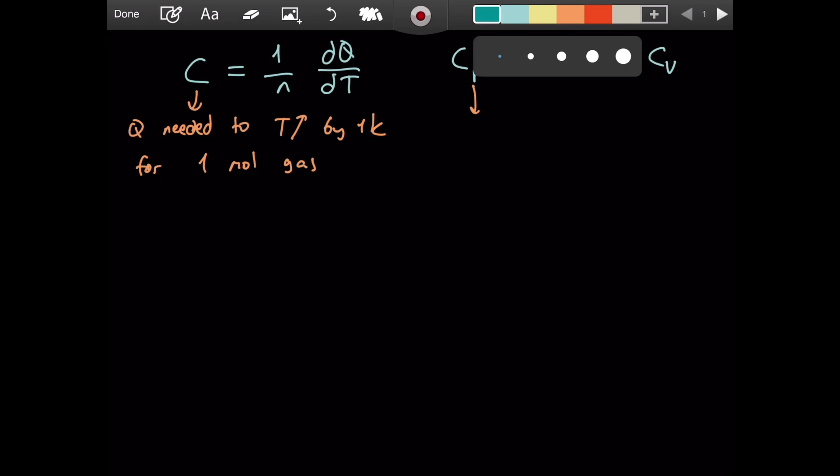Now, for Cp, this definition holds completely, but we add some restriction. During this process where we increase the temperature of a gas, one mole of gas, by one kelvin, we are doing this under constant pressure. So p is constant. The definition of molar heat capacity under constant pressure, so Cp, it is the heat required to increase the temperature by one kelvin for one mole of gas under constant pressure.